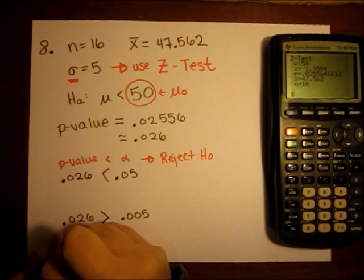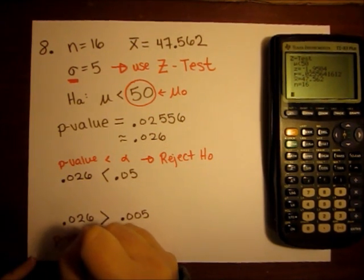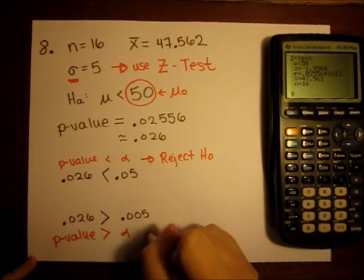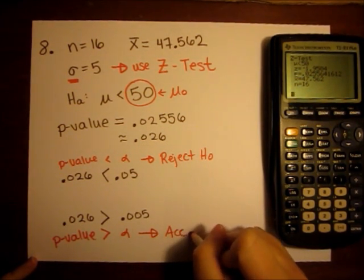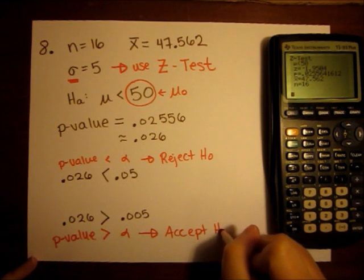So we have the rule that when the p value is bigger than alpha, then I'm going to accept H0.